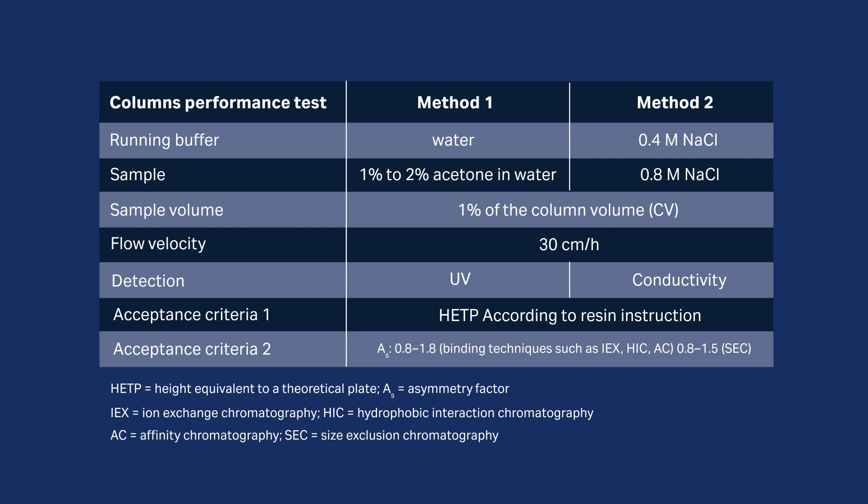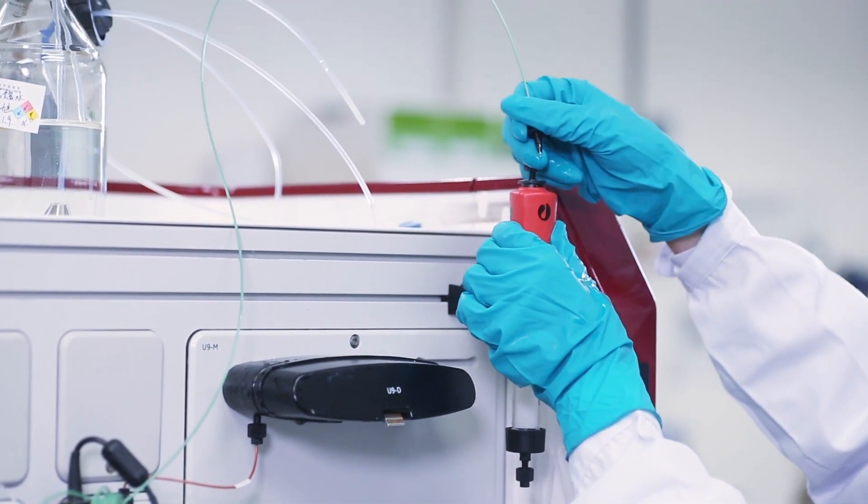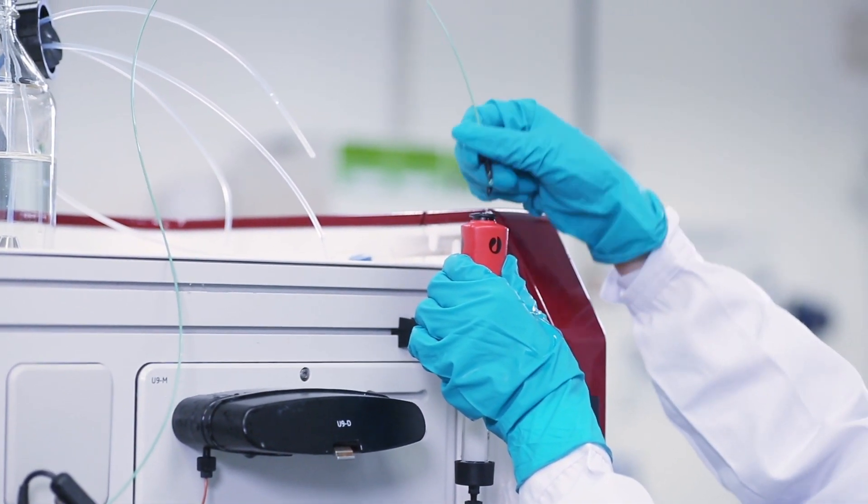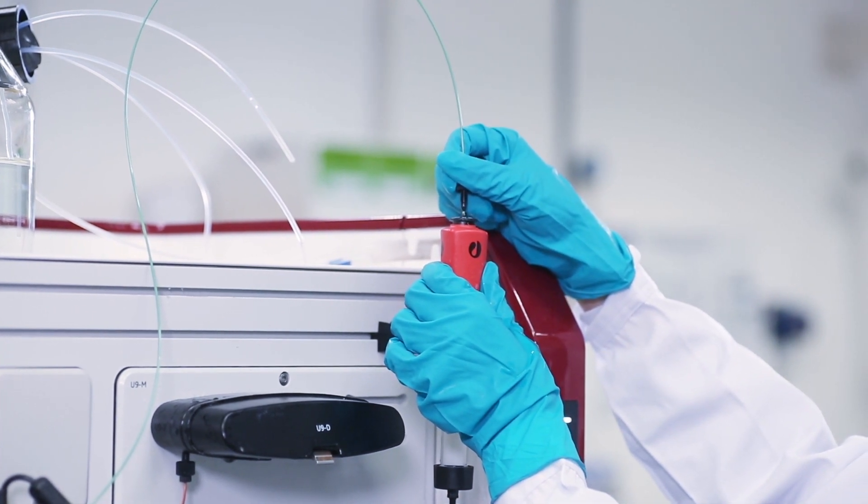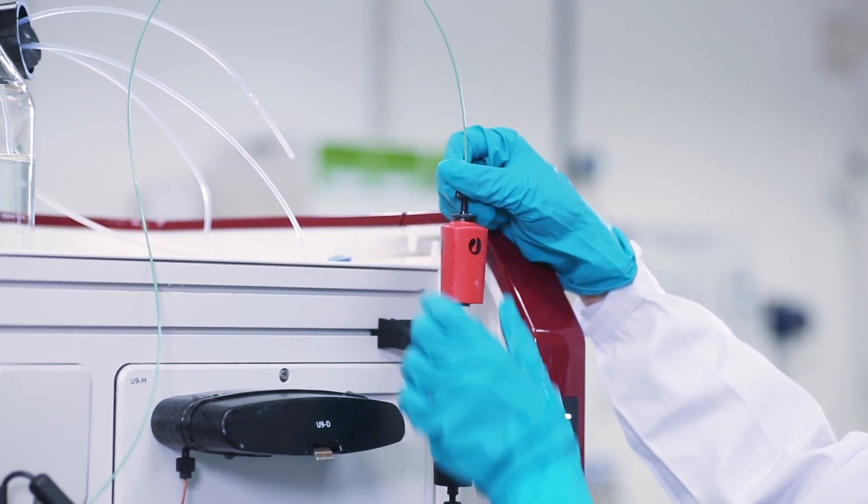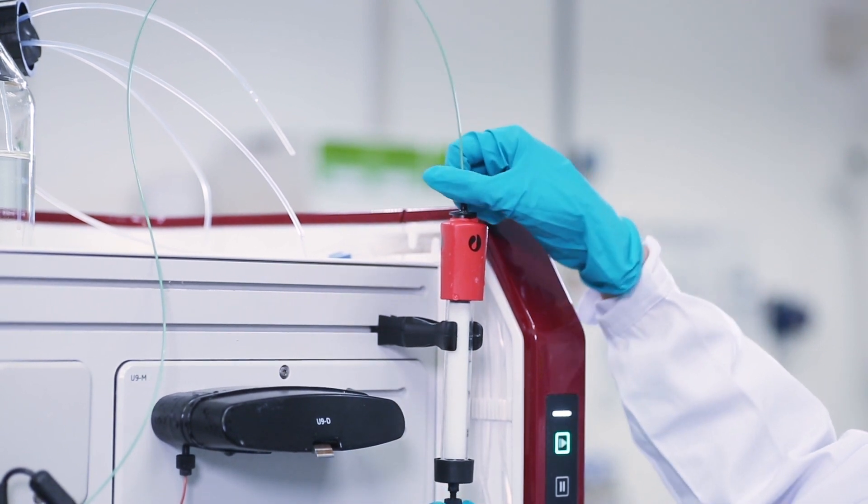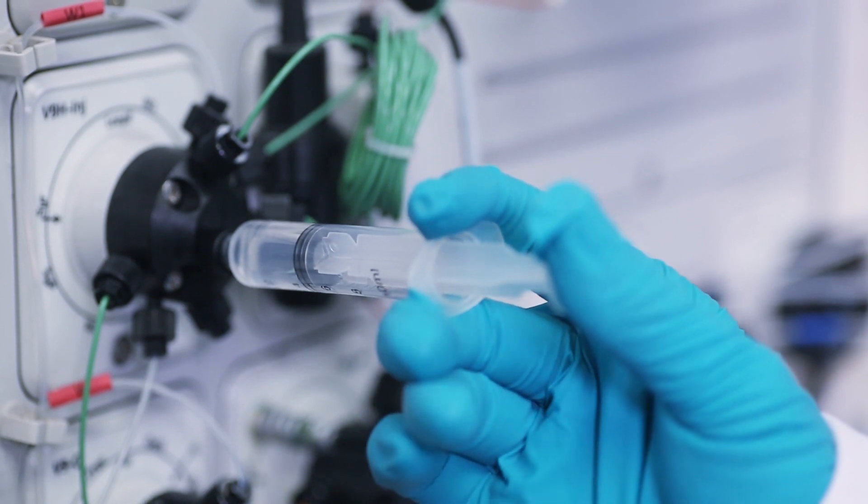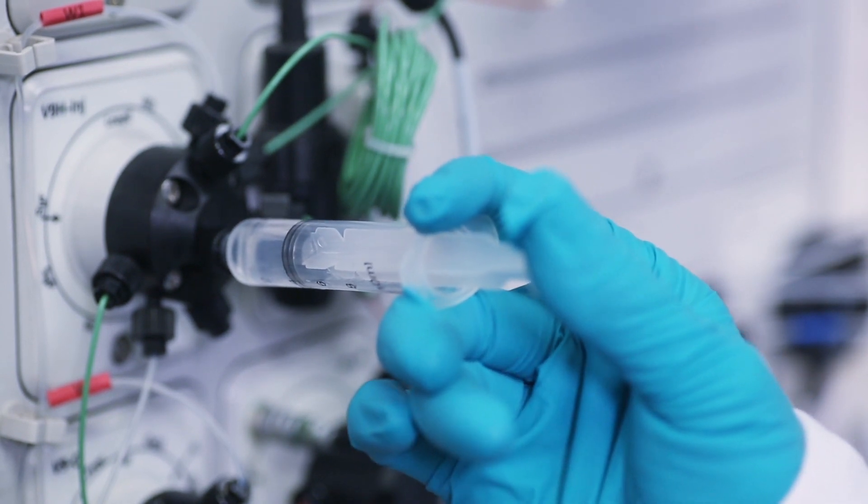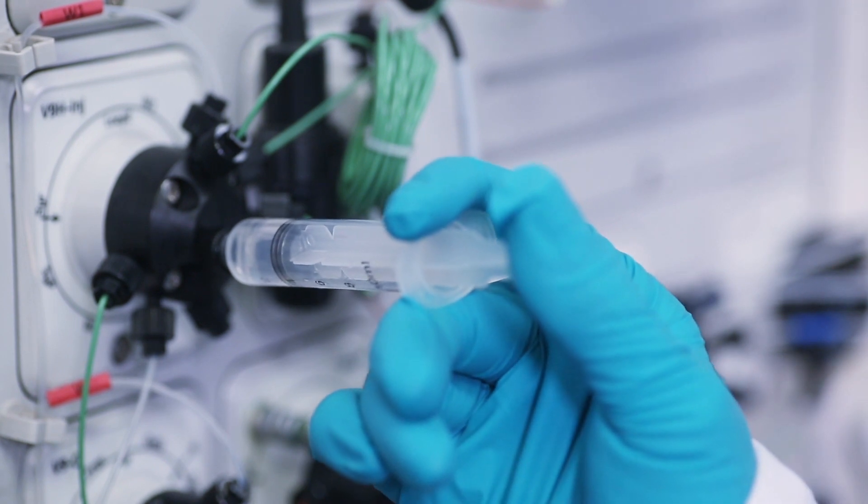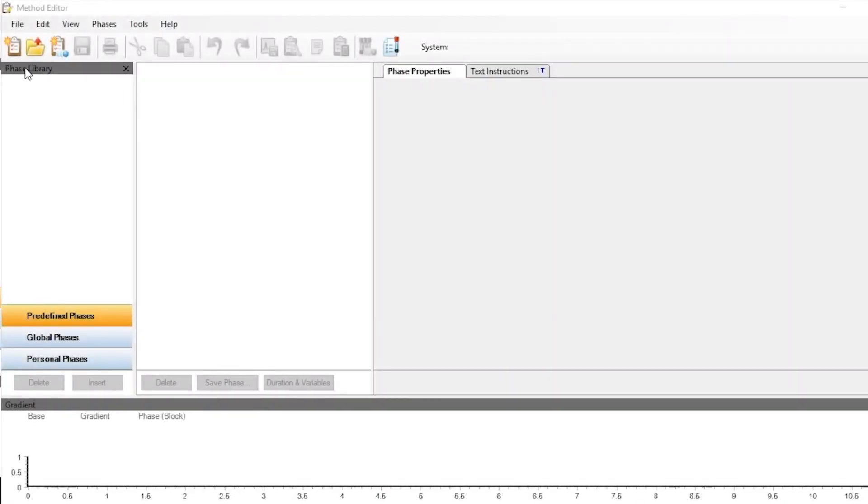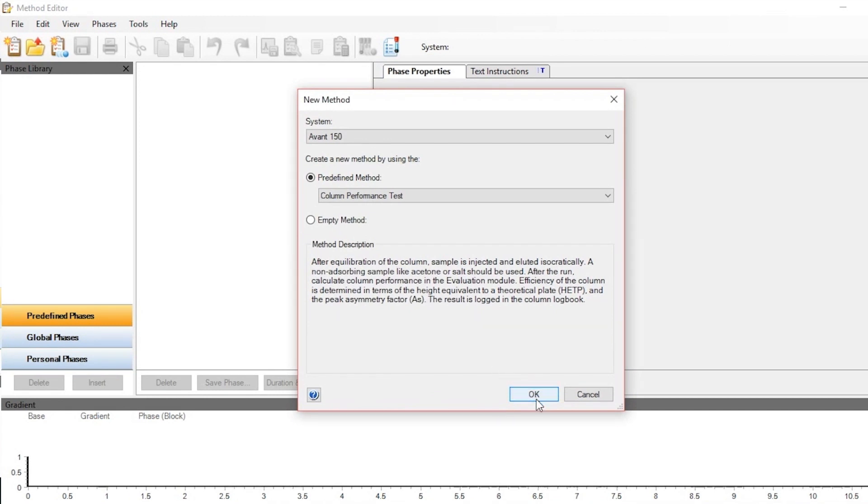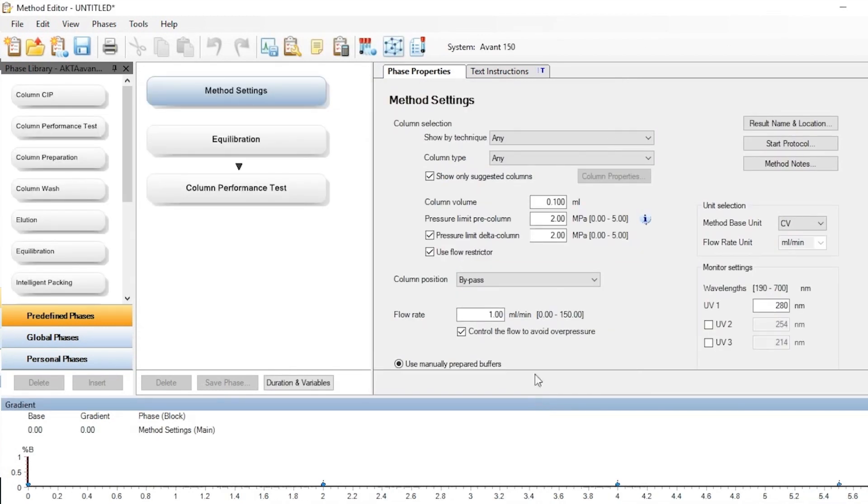Mount the column to the system and make a drop-to-drop connection. Use a syringe to inject the sample to the sample loop. In Method Editor, choose the column performance test template.